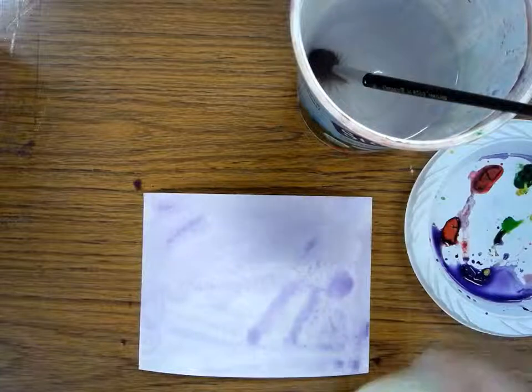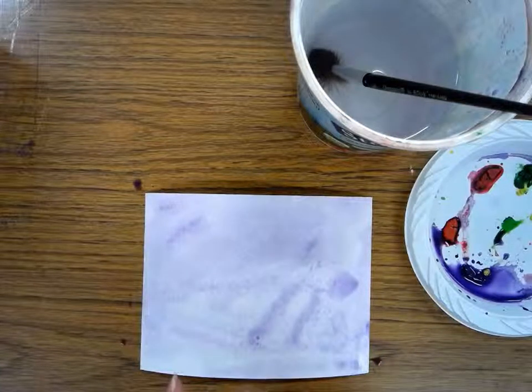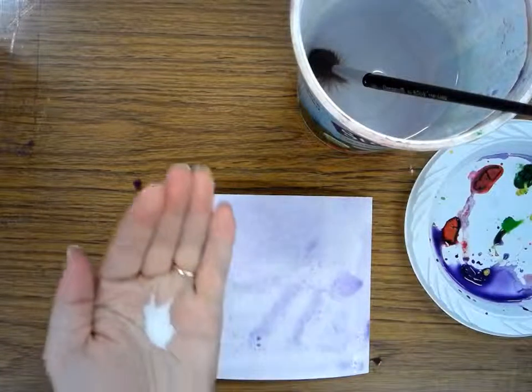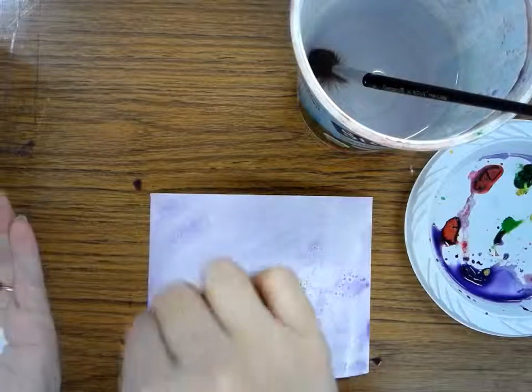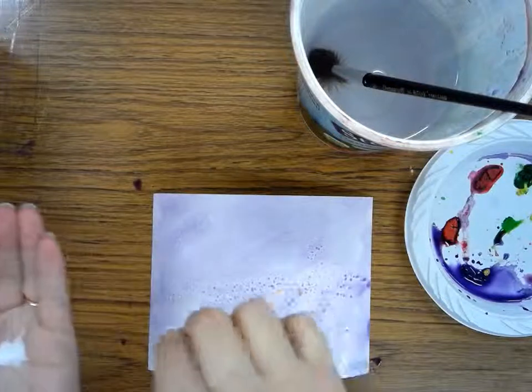So the next thing I'm going to do is actually sprinkle some salt onto the paper. So I have some salt I'm going to pinch it and sprinkle it on there and you have to make sure your paper is still wet.